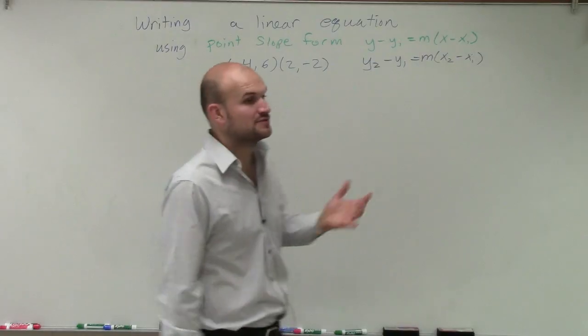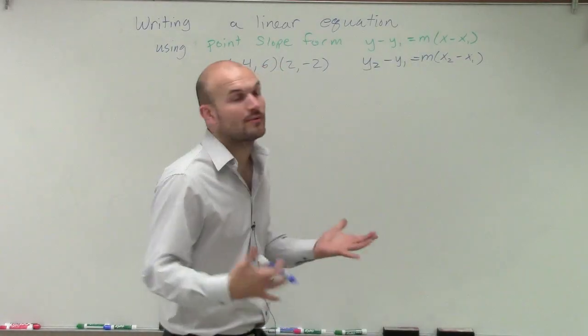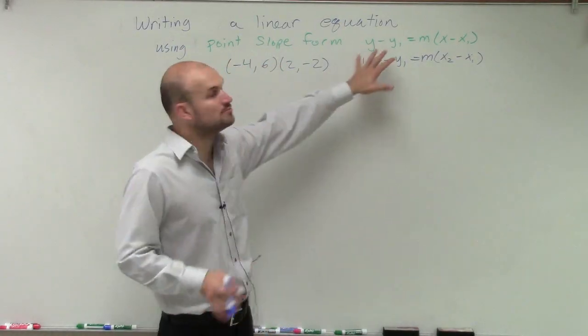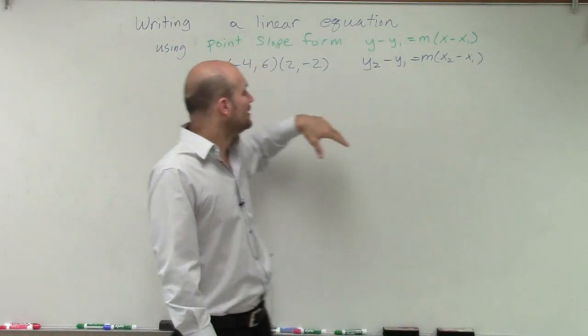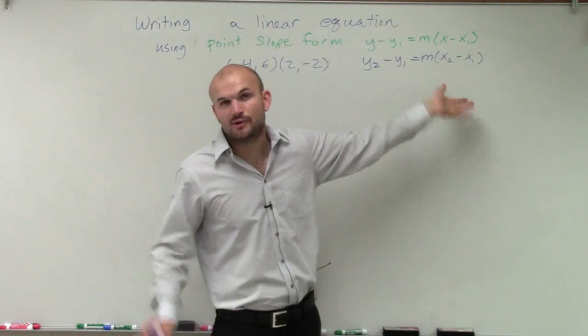OK, so we have two points here, and we want to write the equation of the line. We're going to use point-slope form because point-slope form can help us use two points. Now, in my last problem, I showed you how to find the slope, and we could just plug them into the equation.